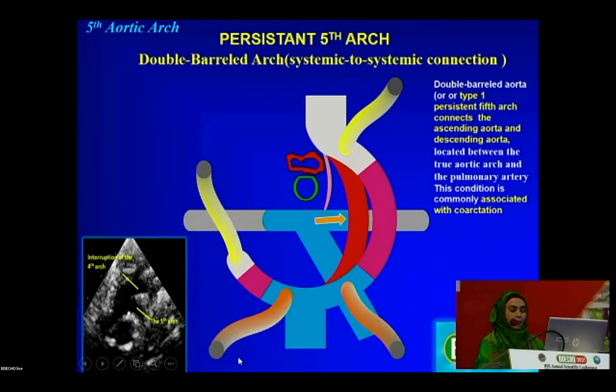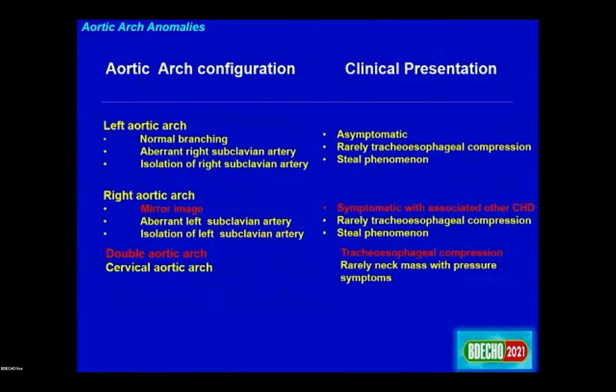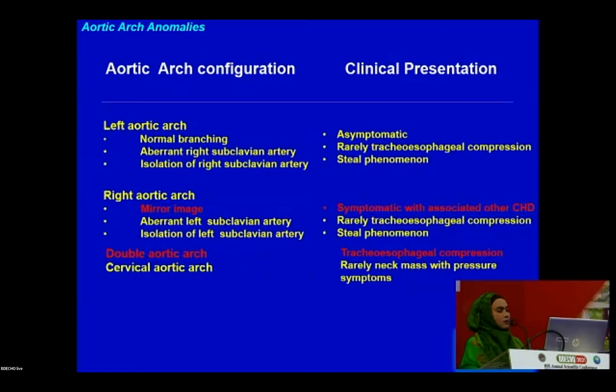Circumflex aorta is an uncommon variant of the right aortic arch due to disappearance of the right fourth arch while the left dorsal aorta persists. In summary: left aortic arch with normal branching — patient is asymptomatic; with isolated right subclavian — steal phenomenon. Right aortic arch with mirror image — symptomatic only if associated with other congenital heart disease; with aberrant left subclavian — rare tracheosophageal compression; with isolated left subclavian — steal phenomenon. Double aortic arch causes tracheosophageal compression.